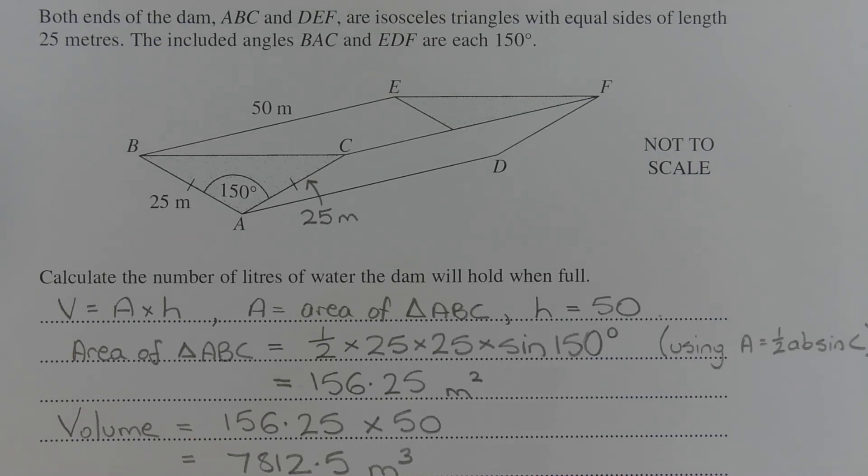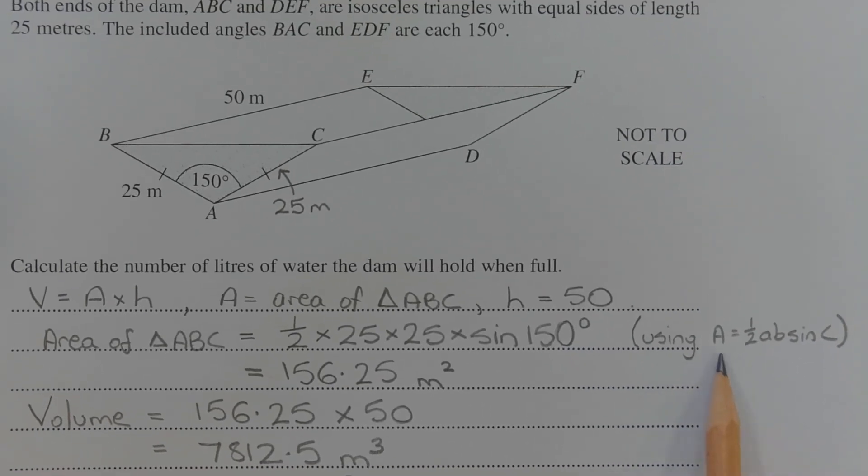So we can apply the formula A equals half times A times B times sine C to find the area of the triangle. So the area of triangle ABC is equal to half times 25 times 25 times sine of 150 degrees, which equals 156.25 square metres.